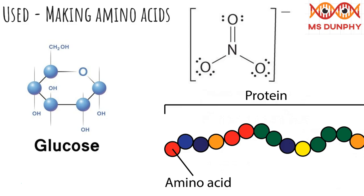In plant cells, glucose is combined with nitrate ions, which are absorbed from the soil, to make amino acids. Amino acids are the building blocks which make up proteins. When amino acids are joined together in a particular sequence, they make a particular protein.